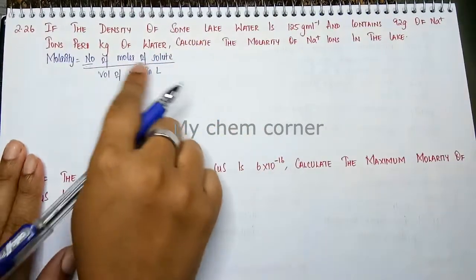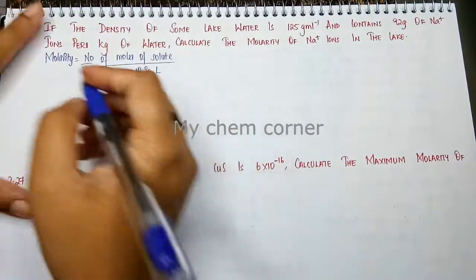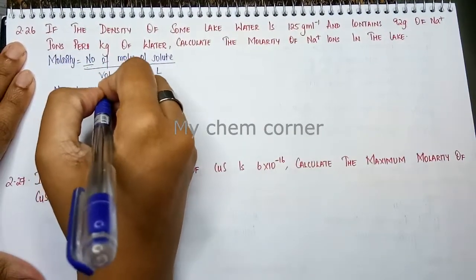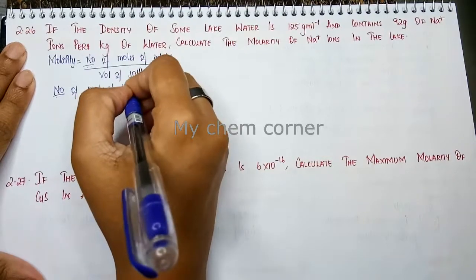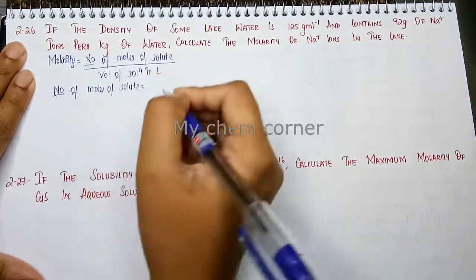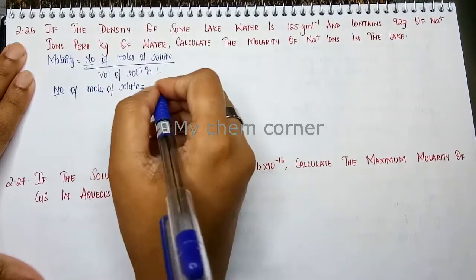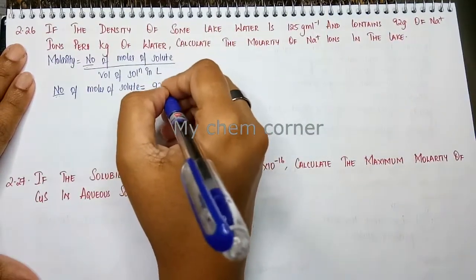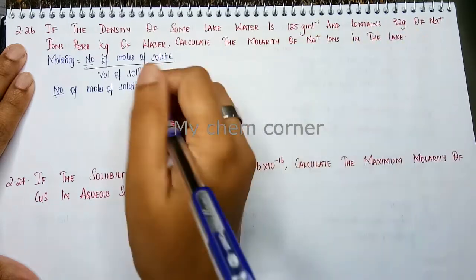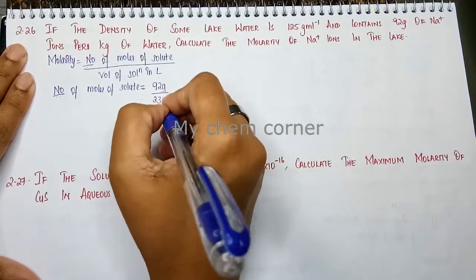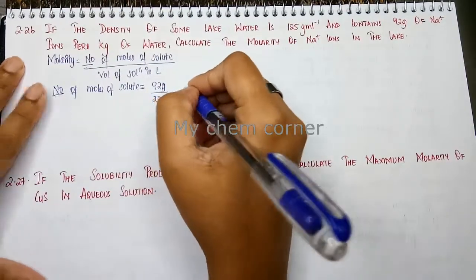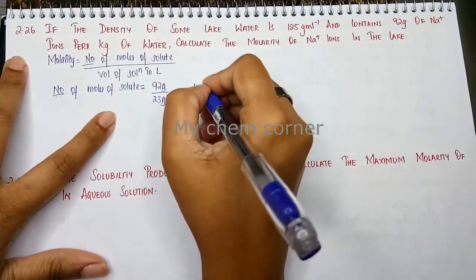Now number of moles of solute we need to find out. So we can write that number of moles of solute equals given mass by molar mass. Given mass of sodium ion is 92 grams. The molar mass of sodium is 23 grams per mole. Gram and gram will get cancelled. When we solve these two you get 4 moles.